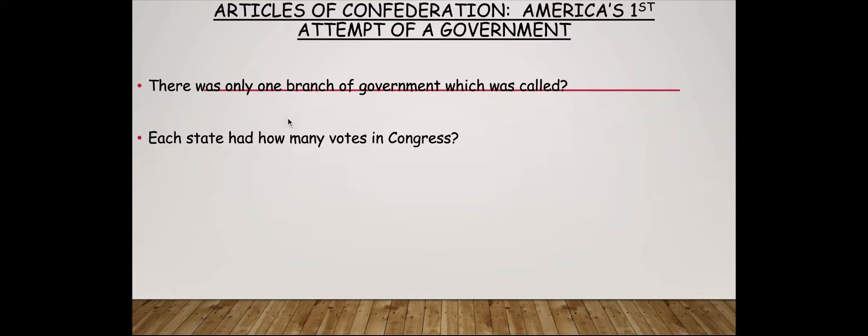So one thing that's unique about the Articles is there was only one branch. In our current constitution, there are three branches, but this one had only a Congress known as the Legislative Branch. Therefore, there was no president, and there was no system of courts.